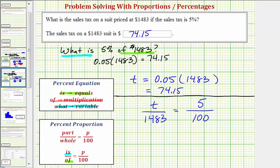Now that we have our proportion we cross multiply and solve for t. So t times 100 must equal 1,483 times five. Well t times 100 is 100t equals 1,483 times five.